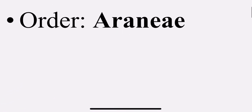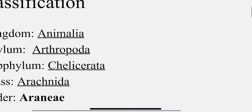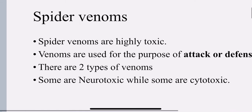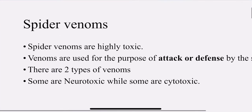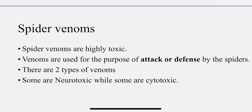Most importantly, it belongs to the order Araneae, kingdom Animalia, phylum Arthropoda. The spider venoms are highly toxic. The venoms are used for the purpose of attack or defense by the spiders. The venoms extracted from spiders are very toxic. Why do spiders use those venoms? To attack as well as to protect oneself — the spider uses that venom, which is highly toxic.